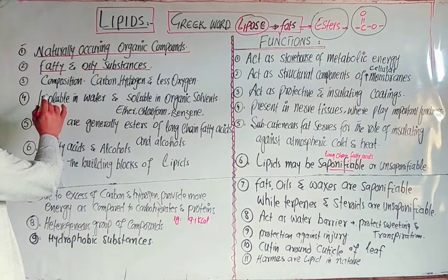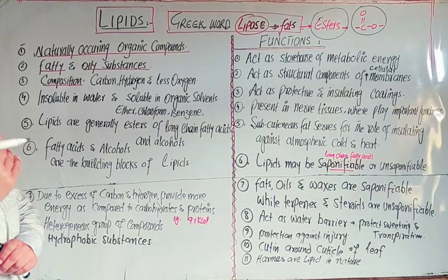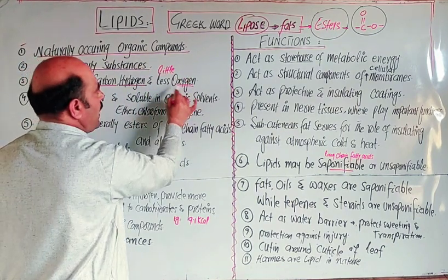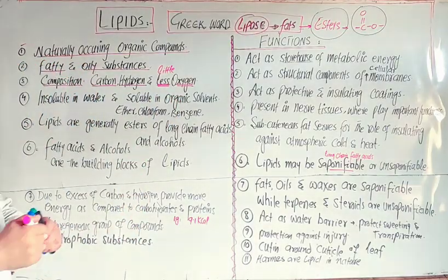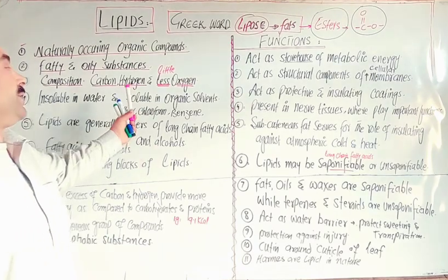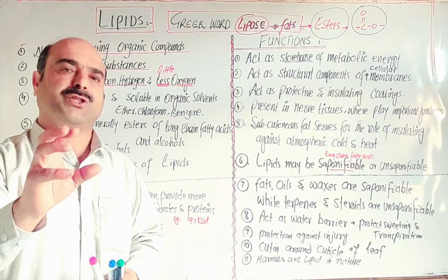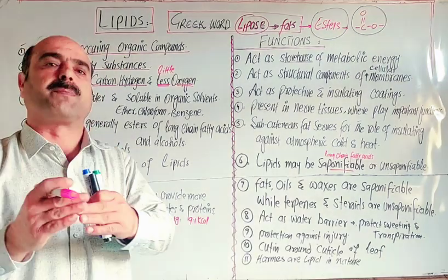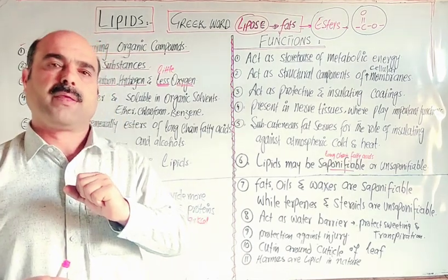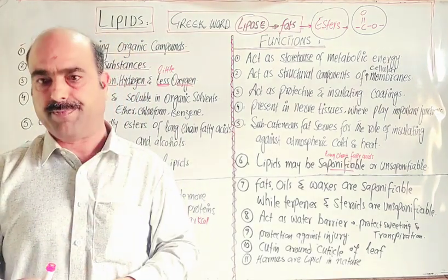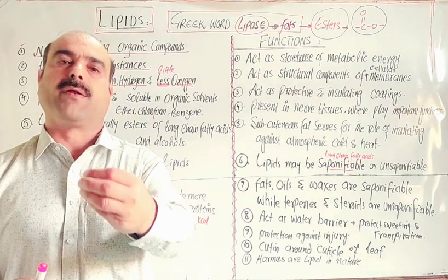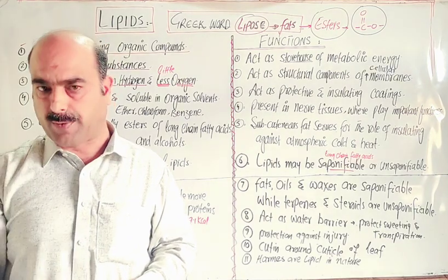Third, their composition: lipids are composed of carbon, hydrogen, and a little amount of oxygen. Compared to proteins and carbohydrates, the most important point is that one gram of lipid provides 9.1 kilocalories of energy, while one gram of protein or one gram of carbohydrate provides only 4 kilocalories of energy.